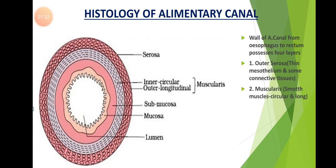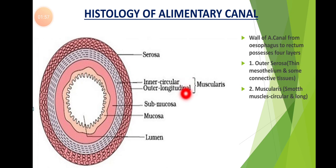The second layer is called as muscularis. This muscularis is made up of smooth muscles. The smooth muscles are arranged in two rows — inner circular muscles and outer longitudinal muscles. This muscularis is also called as muscularis externa.